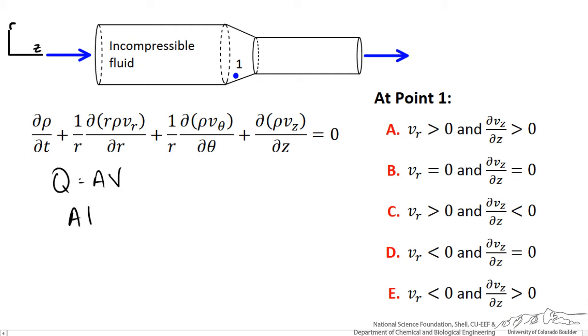So if our area decreases, our velocity must increase. Thus the axial velocity does increase with positive position. As we move to the right in the positive z direction, we are going to a smaller tube, our velocity is increasing.